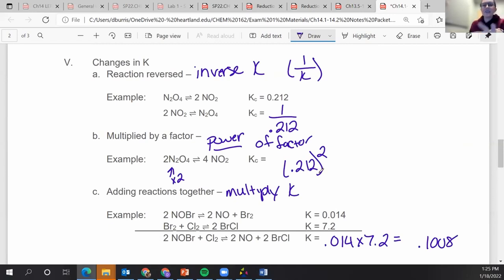So essentially, this is kind of like Hess's law, right? Where you have to piece the reactions together to get the overall reaction. But in Hess's law, whatever you did to the reaction, you also do to the delta H. In this one, whatever you do to the equation, you actually take it one step further.